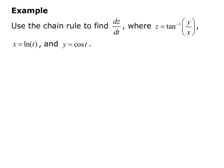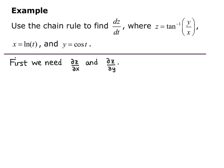Example: use the chain rule to find dz/dt, where z equals inverse tangent of y over x, x equals the natural log of t, and y equals cosine of t. Looking back at our chain rule definition, first we need to find ∂z/∂x and ∂z/∂y.